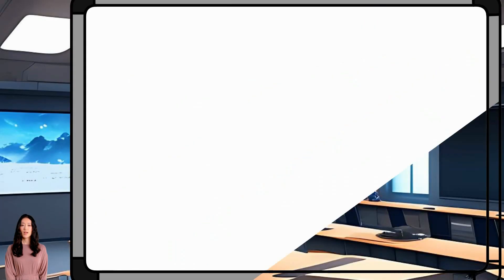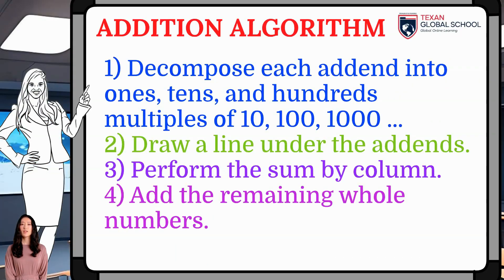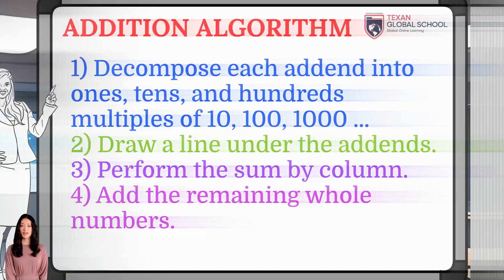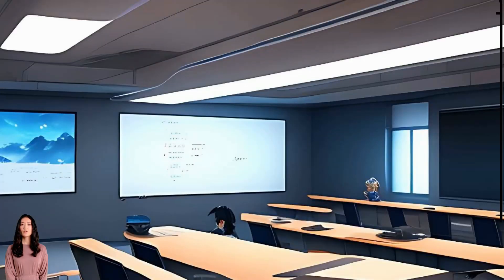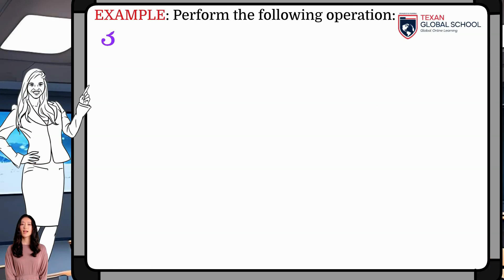The process of adding integers involves separating the addends into 1s, 10s, and/or 100s. Then, add the columns and the remaining addends. Let's see an example.